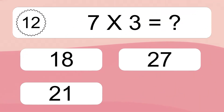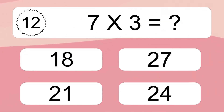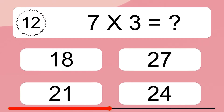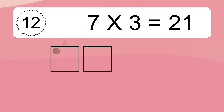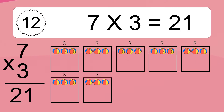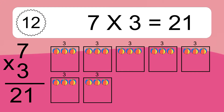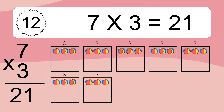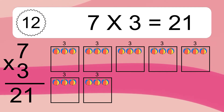7 times 3 equals what? 7 times 3 equals 21. We have 7 boxes, and each box has 3 colorful balls inside. If you count all the balls in all the boxes together, you will have 7 times 3 balls. This equals 21 balls.